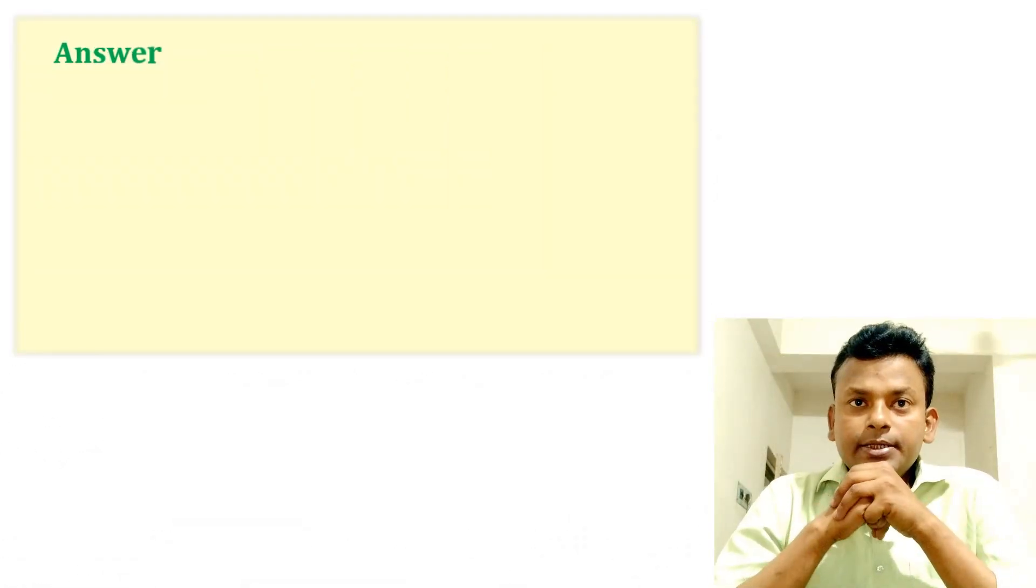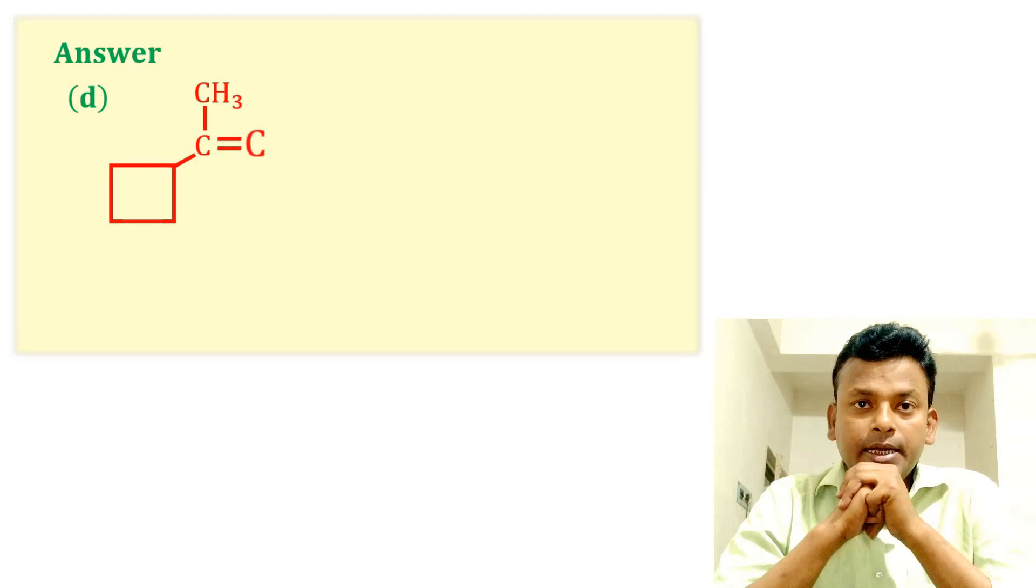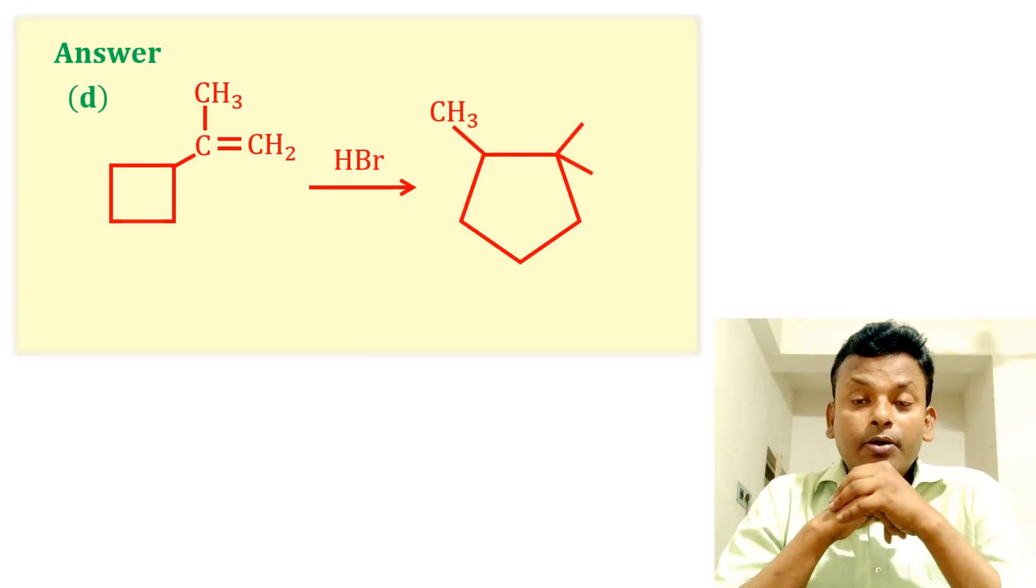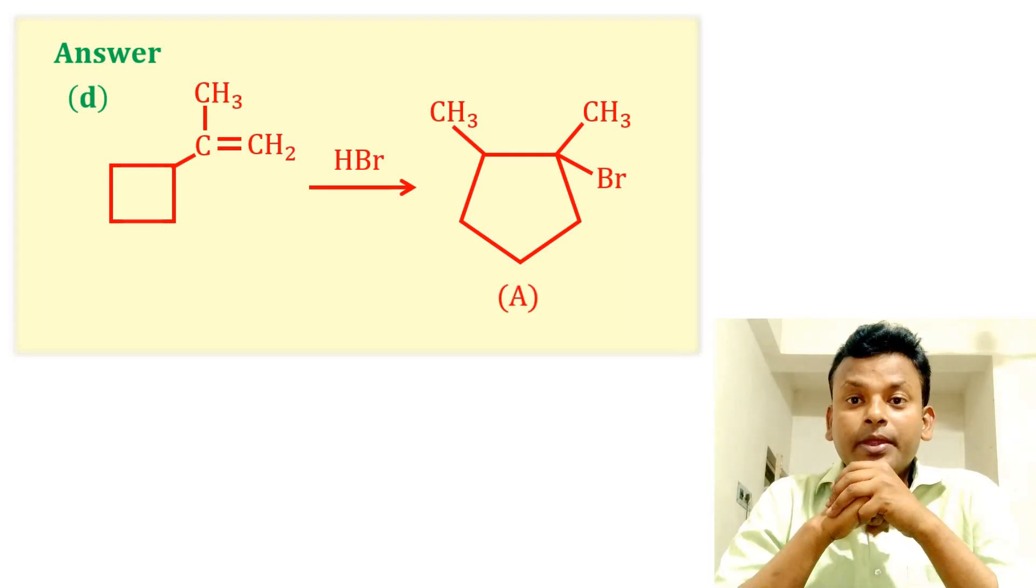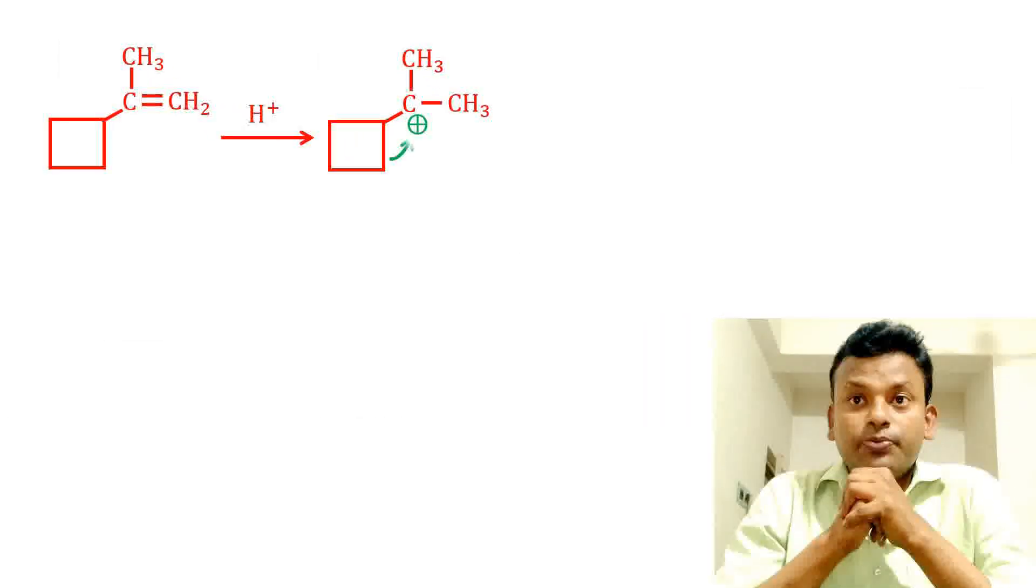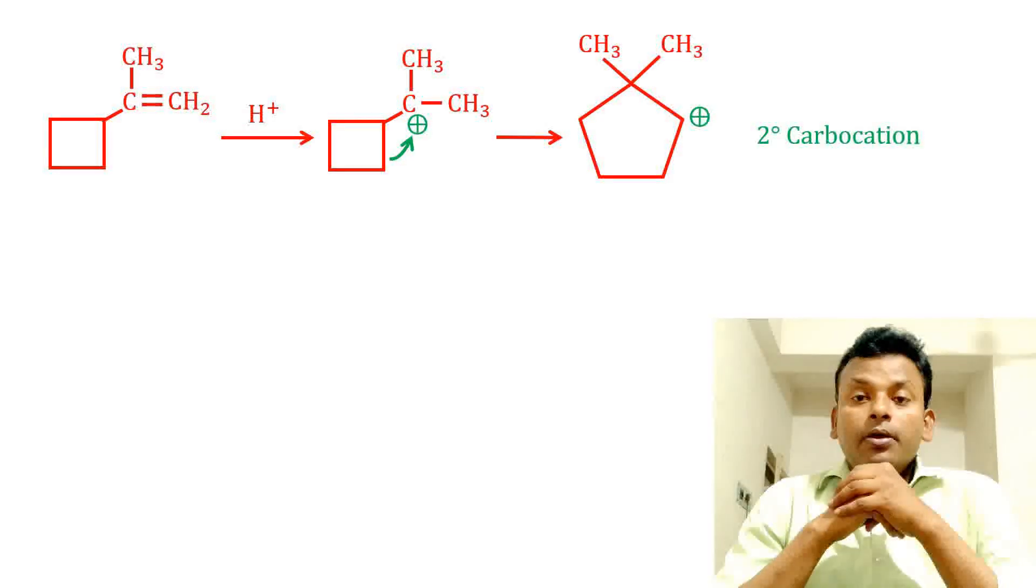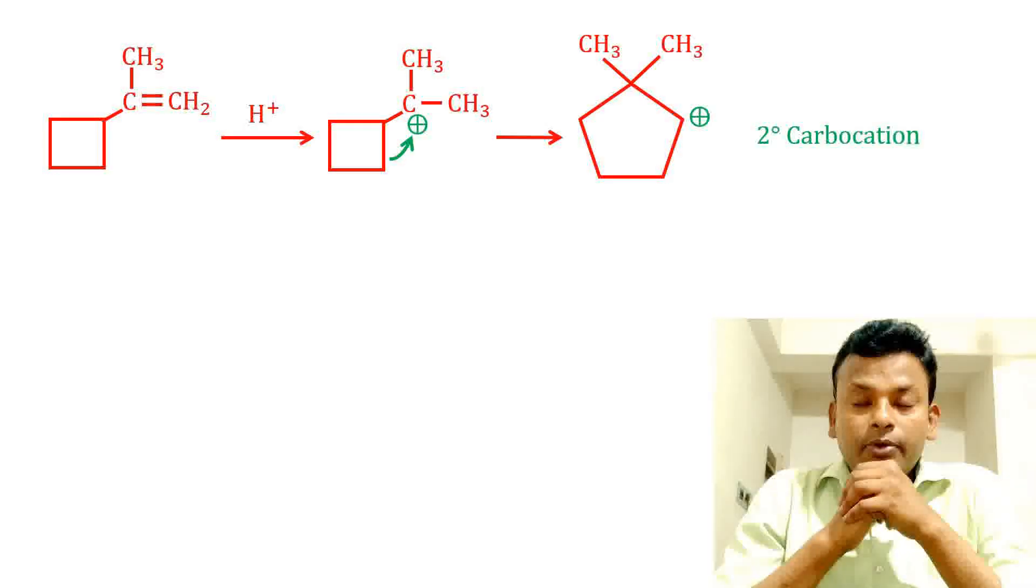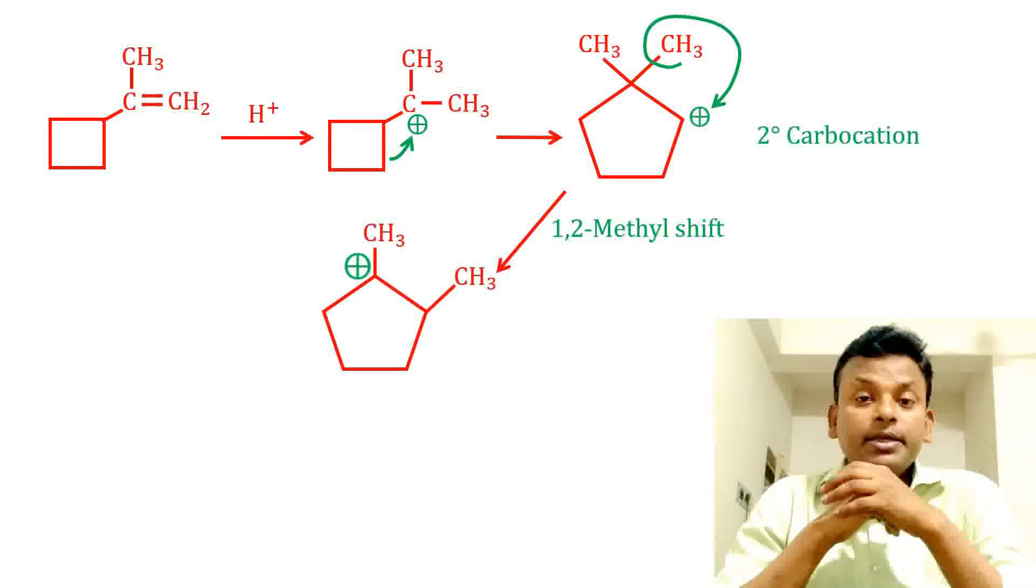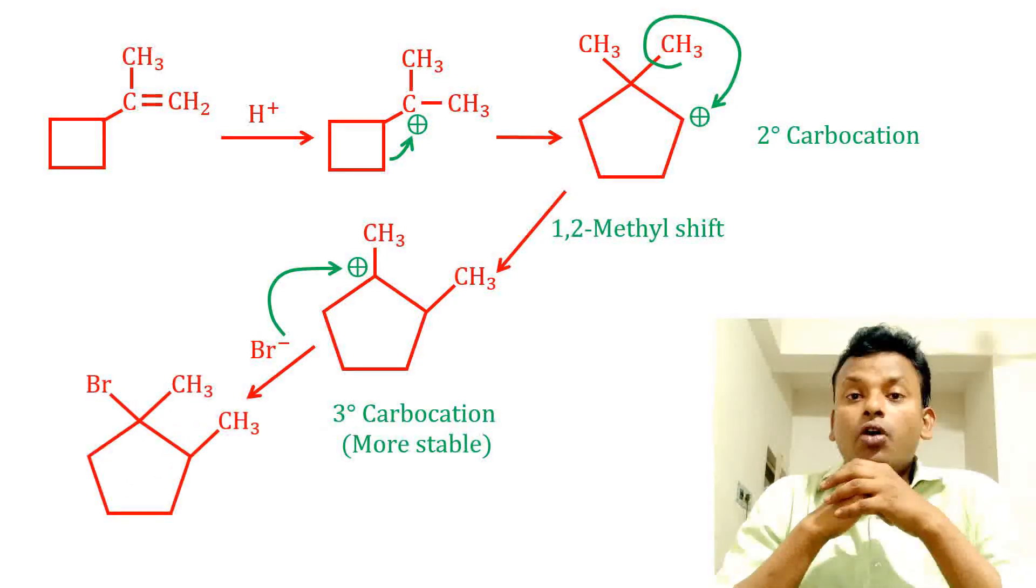Option D is the correct answer. This is the compound that reacts with HBr and gives this five-membered ring compound A. That is the final product. Now how it is formed, now explain. This is the compound. Here C=C double bond is present. First it gets protonated to give this carbocation. And here ring expansion is possible and forms five-membered ring, and also it is 2 degree carbocation, and that is less stable. Here 3 degree carbon is present. Now 1,2 methyl shift is possible, so forms a 3 degree carbocation that is more stable. Then Br negative reacts to give this five-membered ring. So option D is correct answer.